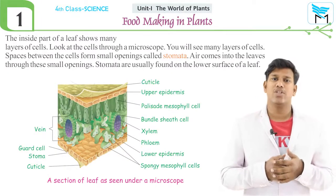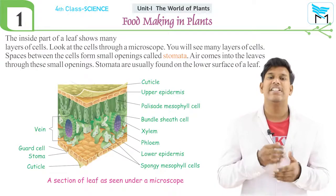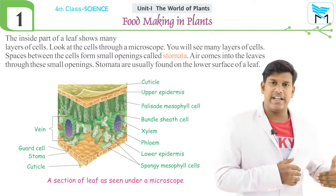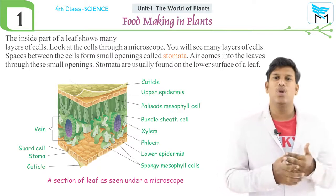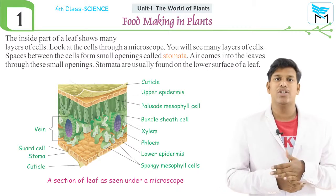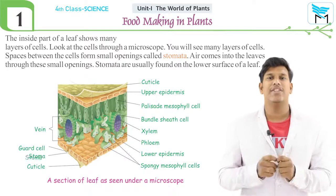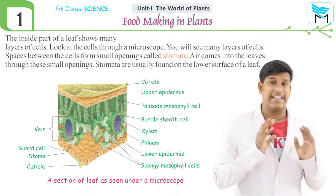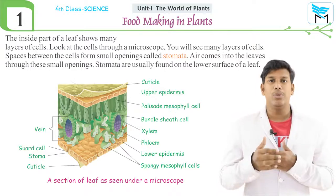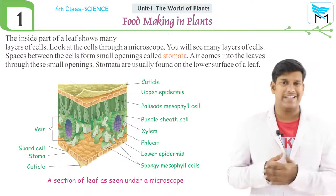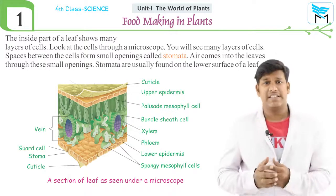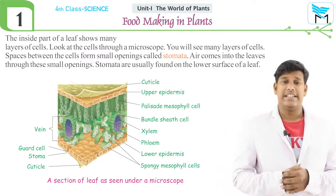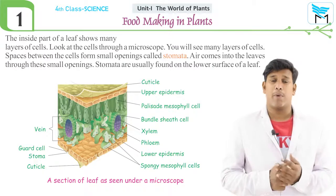Now let us observe the internal structure of the leaf. The internal structure of the leaf consists of several layers from the upper cuticle to the lower layer of cuticle. This lower layer of cuticle consists of structures known as stomata. These stomata are guarded by guard cells, and through these stomata transpiration takes place. Spaces between the cells form openings known as stomata.